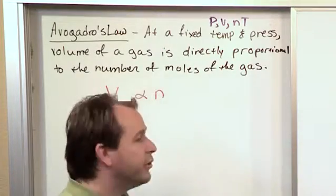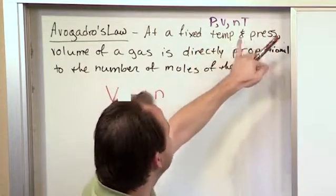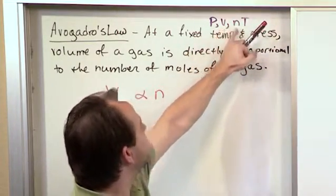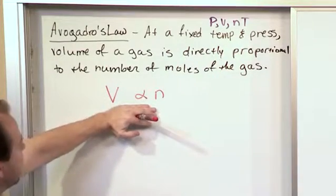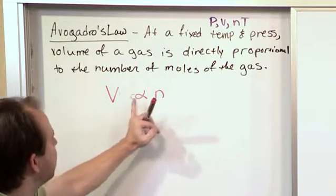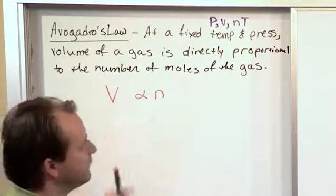It's pressure, it's temperature, it's volume and the number of moles. So if we're holding temperature and pressure constant, these guys, the only thing left is the volume and the number of moles. And now this, Avogadro's law, is telling us that they vary directly. That means when the number of moles goes up, the volume goes up. When the number of moles goes down, the volume goes down.